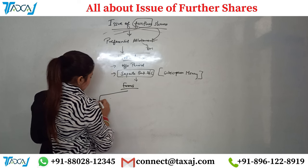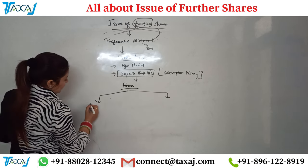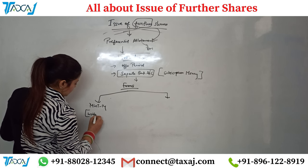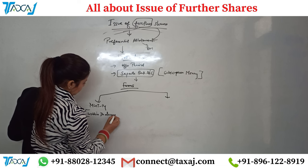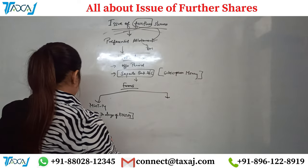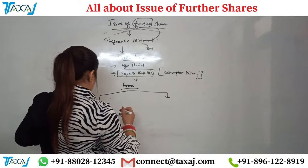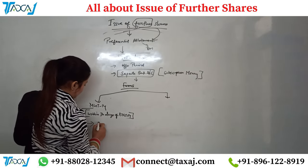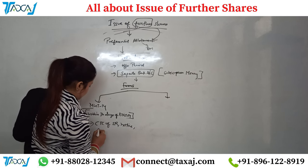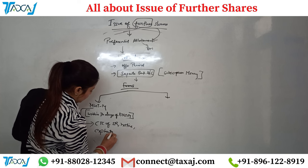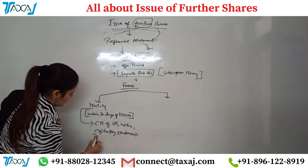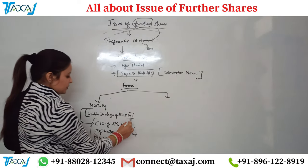After the EGM, the company moves to filing forms. First, Form MGT-14 shall be filed within 30 days of the EGM. Its attachments include: a certified true copy of the special resolution, the notice sent to shareholders, the explanatory statement explaining why shares are being issued, and the PAS-4 offer letter — these three attachments go with MGT-14.